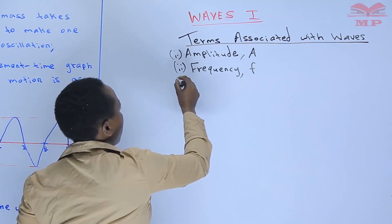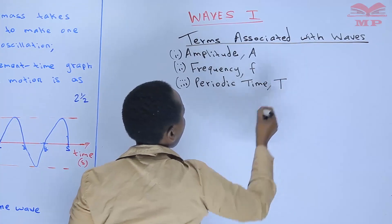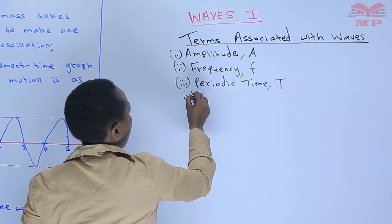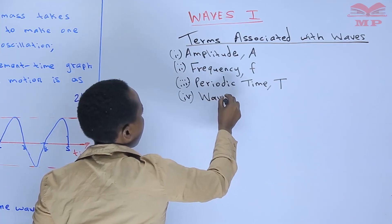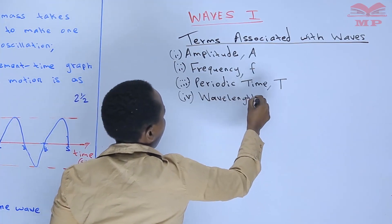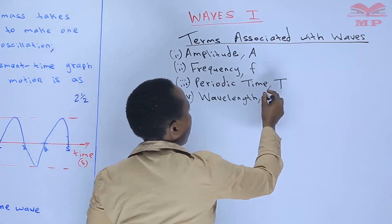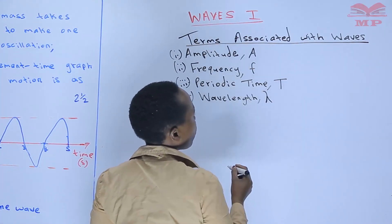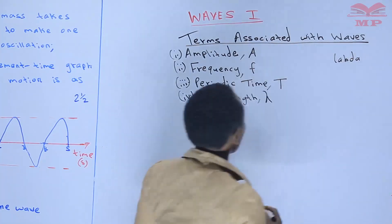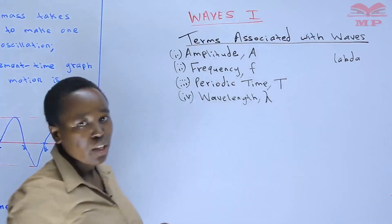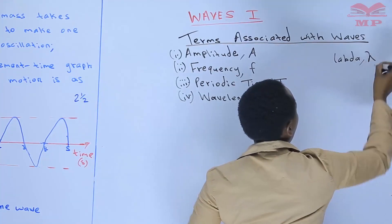Number three: periodic time, denoted by capital letter T. And finally, we are going to look at wavelength. Wavelength is denoted by the Greek letter lambda. This is how we write it — lambda. It's a Greek letter.